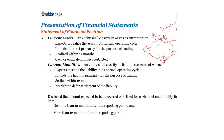Two: it holds the asset primarily for the purpose of trading. A good example is inventory as well. Now let's look at a real estate business. A real estate company will have buildings or land for sale. Now, building and land will be a non-current asset to other companies, but for real estate companies they will be current assets because they are held primarily for the purpose of trade.